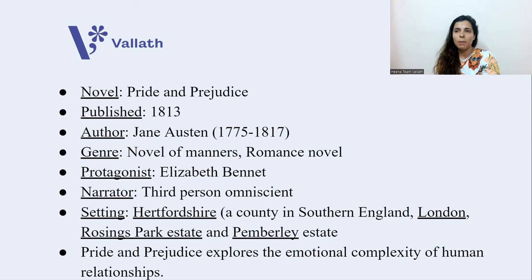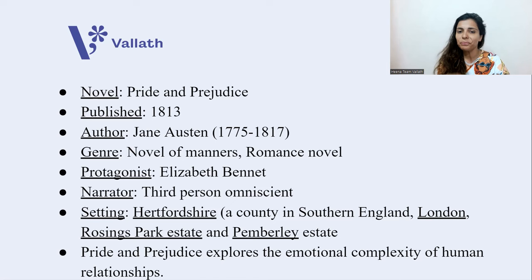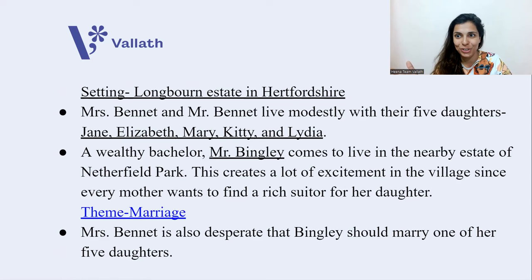The most important settings are Hertfordshire, a county in southern England, where we find a few estates or houses. The second setting is London. The third setting is Rosings Park Estate, and the fourth is Pemberley Estate. In a crux, what does Pride and Prejudice explore? It explores the emotional complexity of human relationships. Let's dive into human relationships. Let's begin.